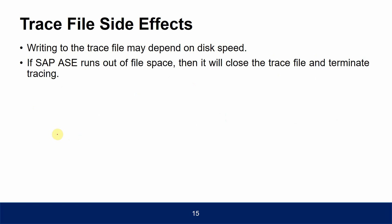You cannot trace SQL text of unoptimized commands such as INSERT and EXECUTE statements. Encrypted column values do not appear in trace output for security reasons. Tracing will never overwrite an existing file. If the session being traced quits, tracing is terminated. There is no built-in support for tracing parallel query execution using the worker thread model. Also, writing to the trace file may depend on disk speed, and if Adaptive Server runs out of file space, it will close the trace file and terminate tracing.